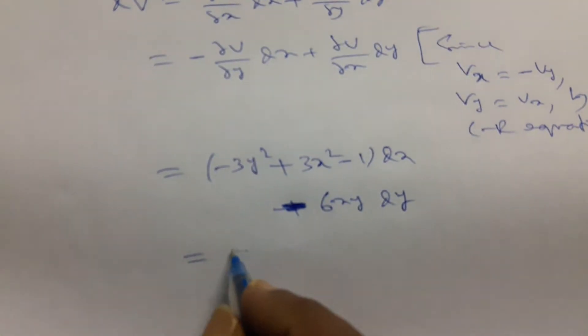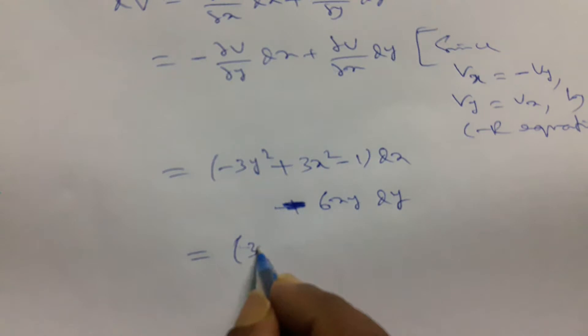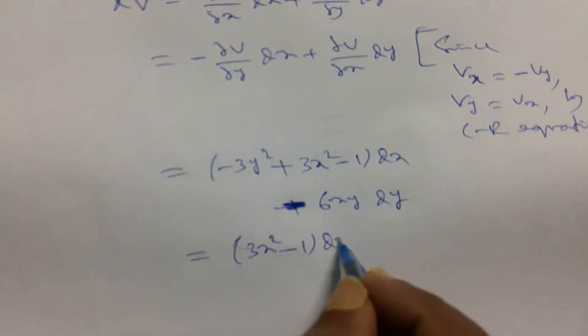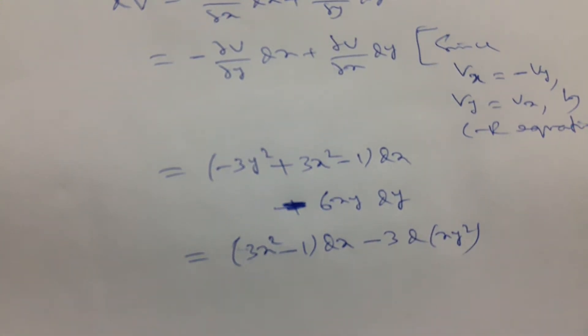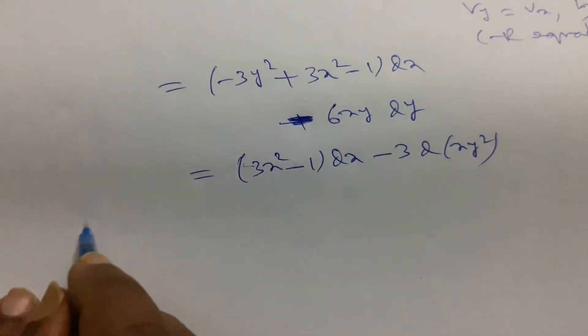Now we rearrange the term, 3x square minus 1 dx minus 3d of xy square. Now integrating both sides.